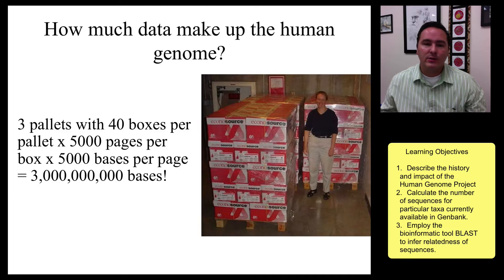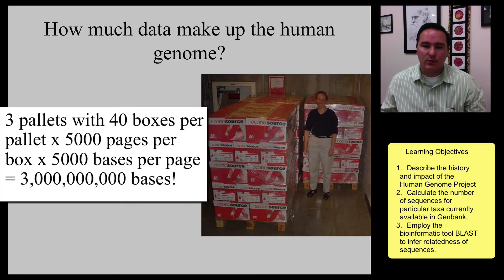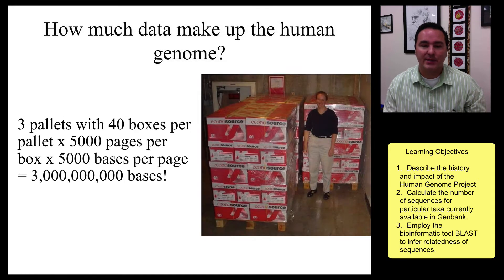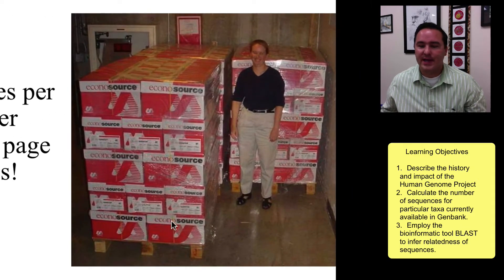It would take three pallets with 40 boxes per pallets, with 5,000 pages per box, with those 5,000 nucleotide bases per page. That would get you to 3 billion. So this is about what it would take to write the Human Genome of one person.